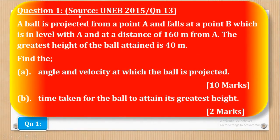We shall start with question 1. Question 1 was from UNEB 2015 paper 2 question 13 and says that a ball is projected from a point A and falls at a point B which is in level with A and at a distance of 160 meters from A. The greatest height attained by the ball is 40 meters. Find part A: the angle and velocity at which the ball is projected (10 marks), and part B: the time taken for the ball to attain its greatest height.